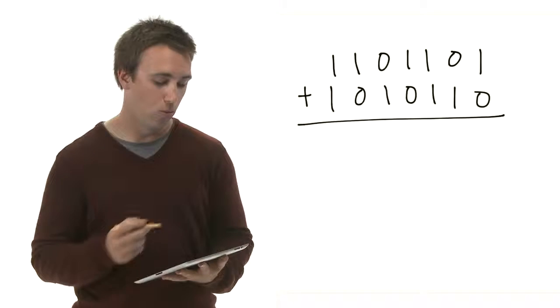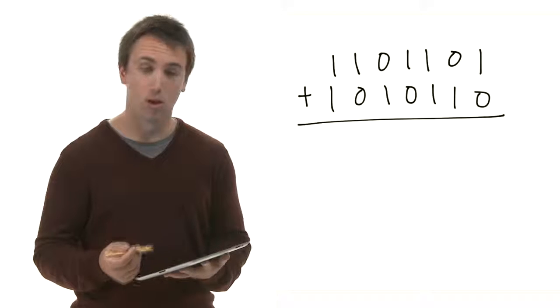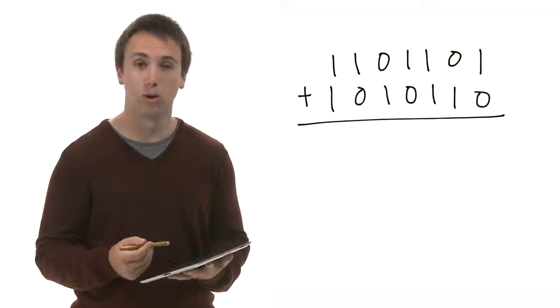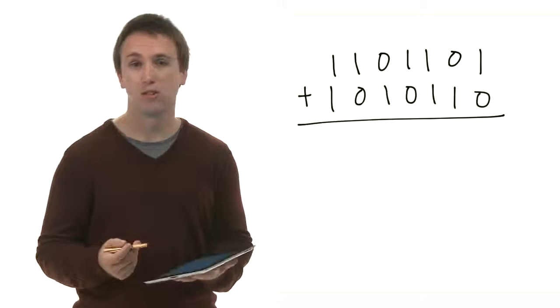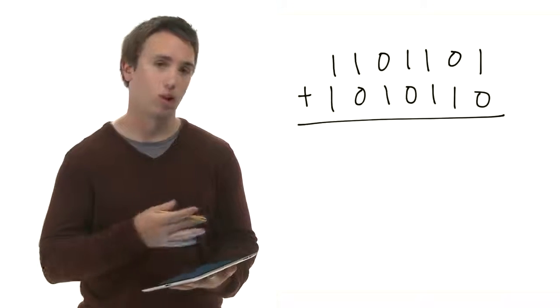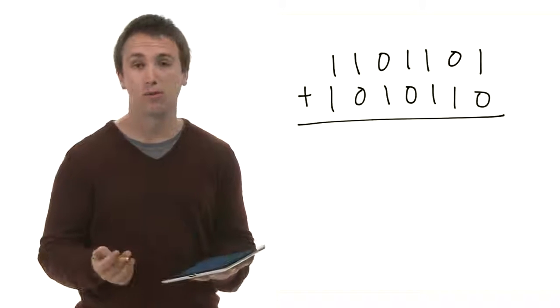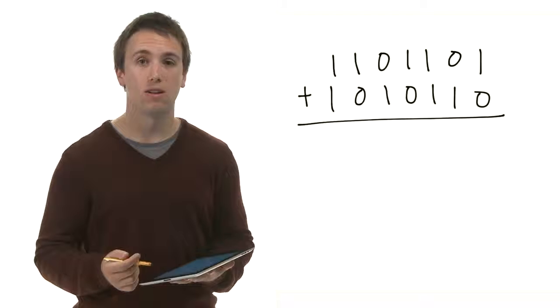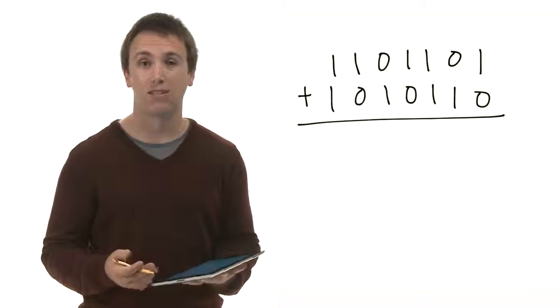One thing you might not have expected is that all of the algorithms you learned to add, subtract, multiply, and divide in decimal notation work in binary notation as well. We'll do an example of addition. Here we've got 1 1 0 1 1 0 1 plus 1 0 1 0 1 0. Just as in decimal addition, we'll start from the right and work our way to the left. The only difference is that we carry a 1 if the two digits we're adding have a sum greater than 1, instead of a sum greater than 9 as in decimal.